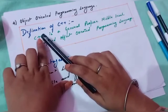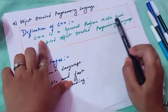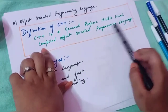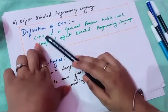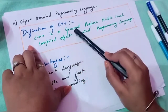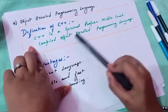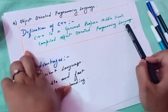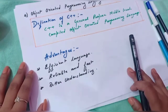C++ is a general purpose, middle level, compiled, object-oriented programming language. Now if anyone asks you what is C++, you will say: C++ is a general purpose, middle level, compiled, object-oriented programming language.